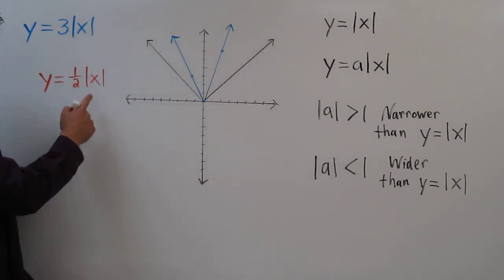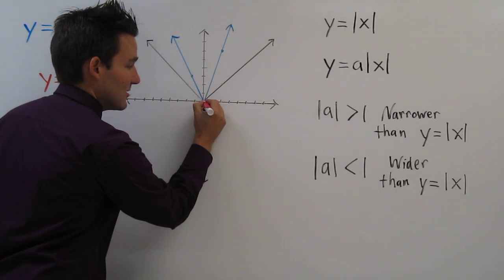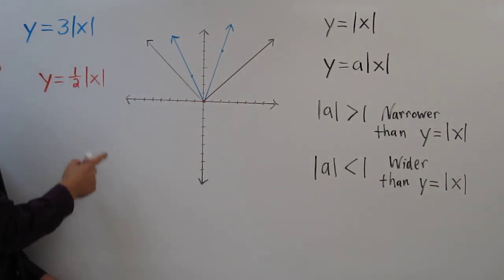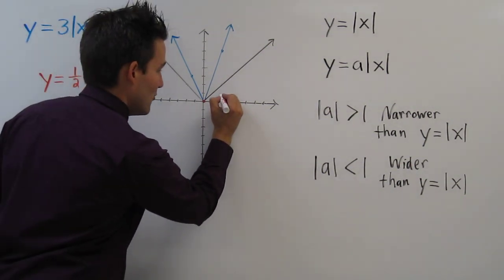Let's try x equals 0. When x equals 0, 0 times 1 half is 0, so we have the point (0, 0). When x equals 2, 2 times 1 half is 1. We have the point (2, 1).